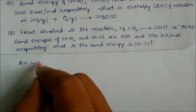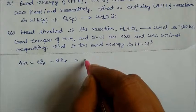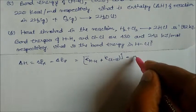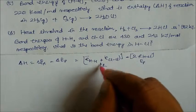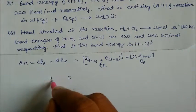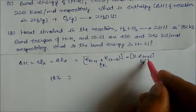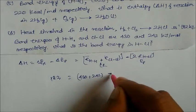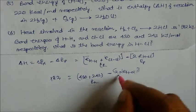Delta H = [E(H-H) + E(Cl-Cl)] − [2 × E(HCl)]. So −182 = (432 + 242) − 2 × E(HCl). On solving, 2 × E(HCl) = 432 + 242 + 182 = 856 minus ... solving gives E(HCl) = 245 kilojoule per mole.